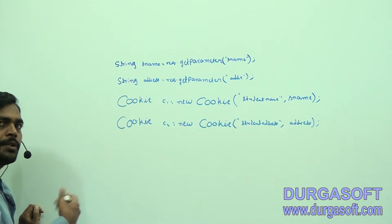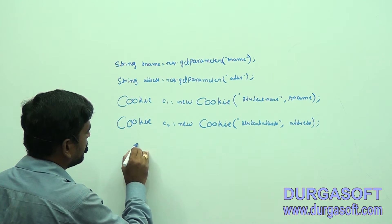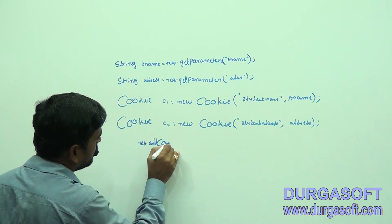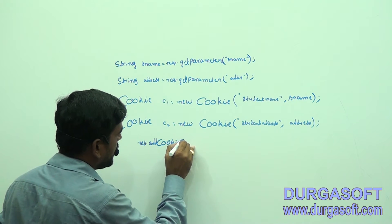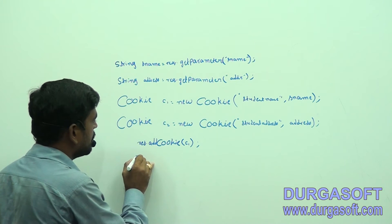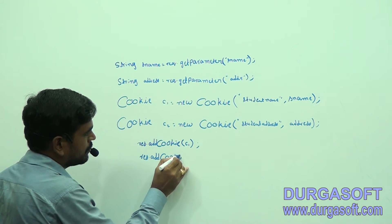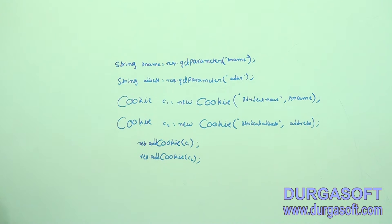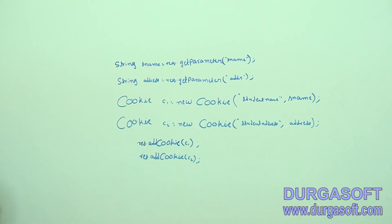We can send these cookie objects from server side to browser side by adding them to the response object. We use res.addCookie(c1) and res.addCookie(c2) to add all the cookie objects to the response object.